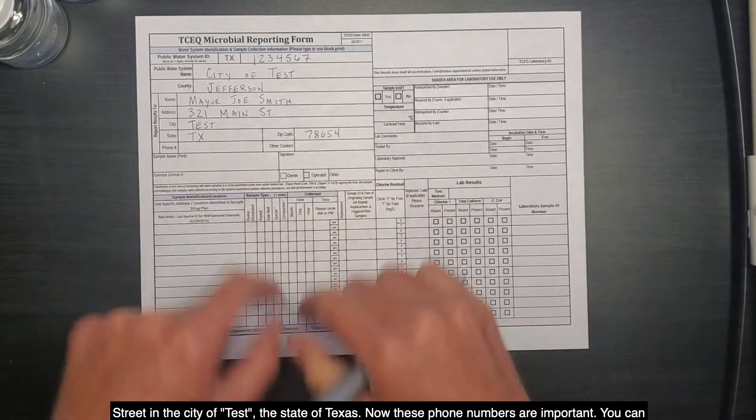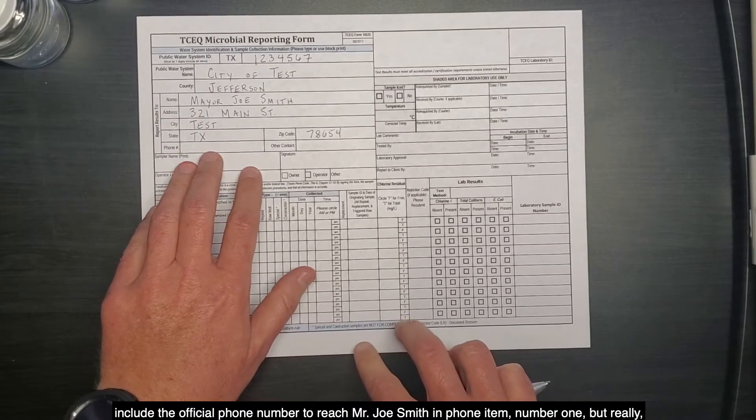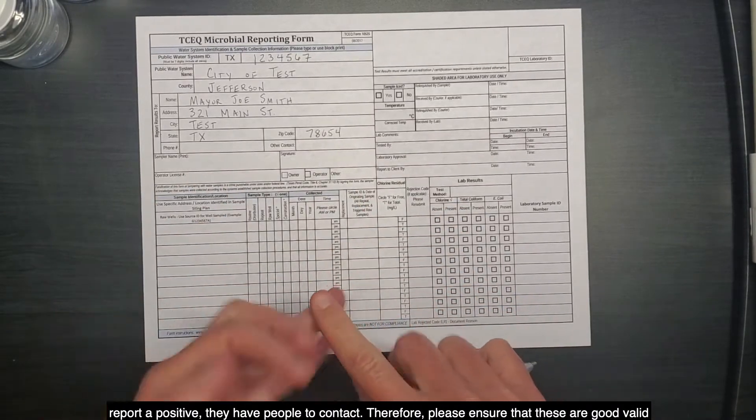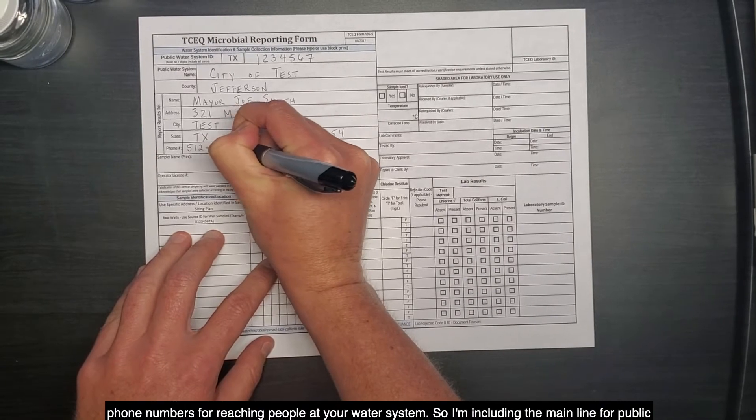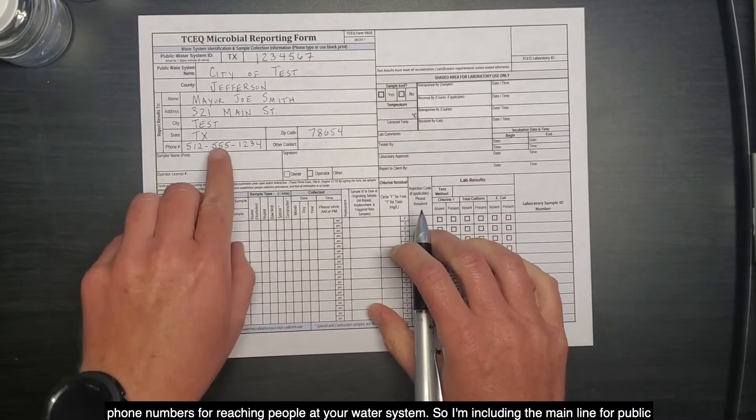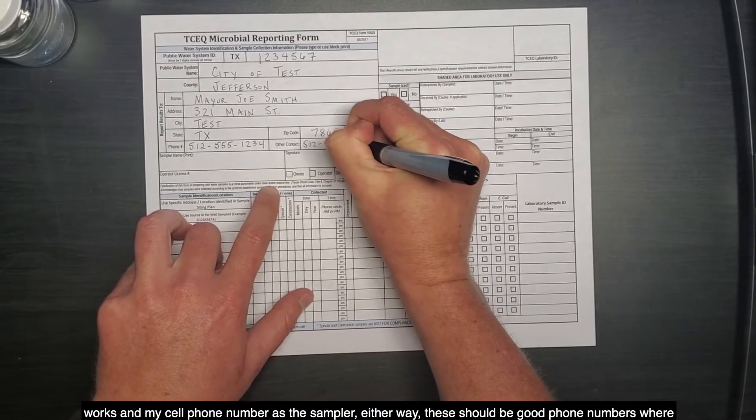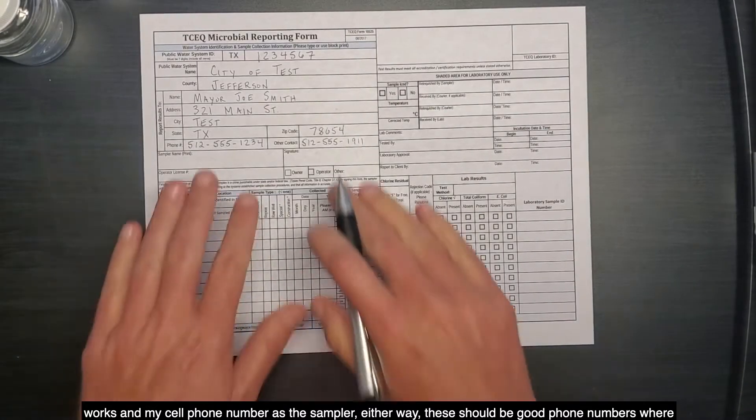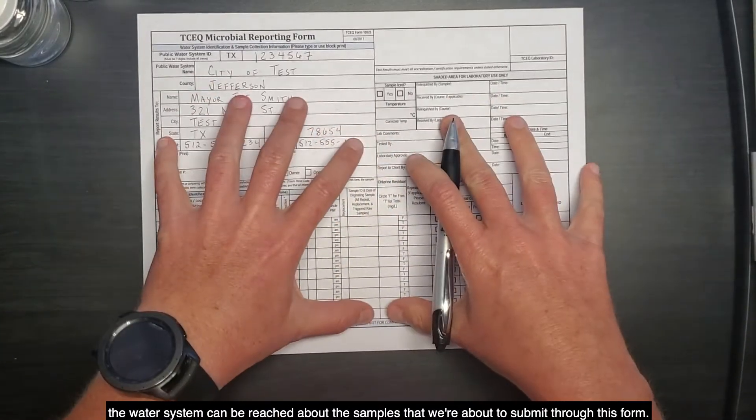Now, these phone numbers are important. You can include the official phone number to reach Mr. Joe Smith in phone item number one. But really, these two contacts are to ensure if the laboratory needs to ask questions about the form or to report a positive, they have people to contact. Therefore, please ensure that these are good, valid phone numbers for reaching people at your water system. So, I'm including the main line for Public Works and my cell phone number as the sampler. Either way, these should be good phone numbers where the water system can be reached about the samples that we're about to submit through this form.